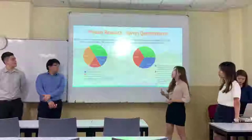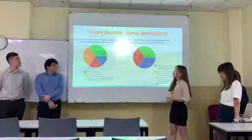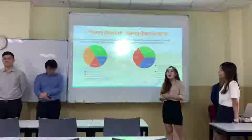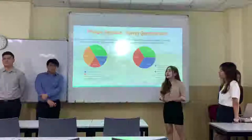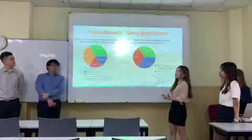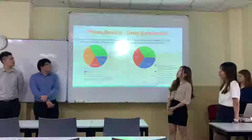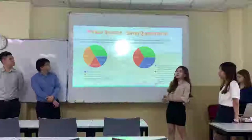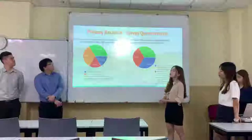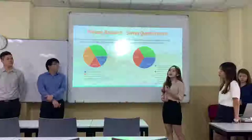Next, I'd like to talk about the primary research, which is the survey questionnaire. We selected three companies: Starbucks, Booger, and 8Asia. We gave them questions and gathered feedback. Based on the results, we selected the most important questions related to how Triple Bottom Line affects companies.